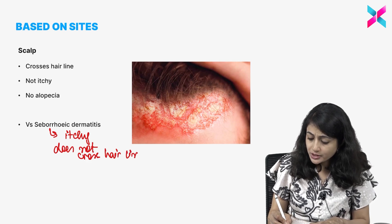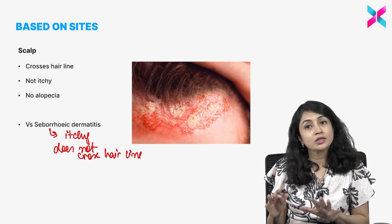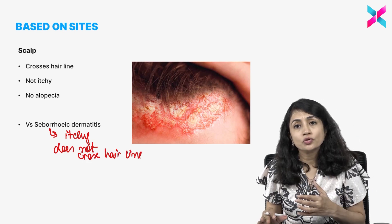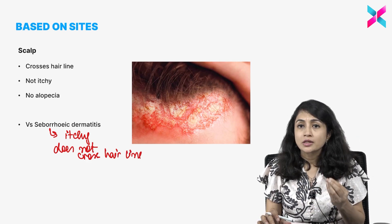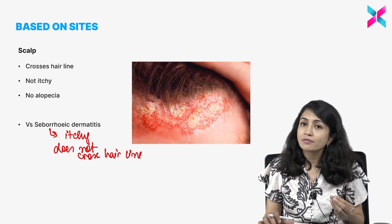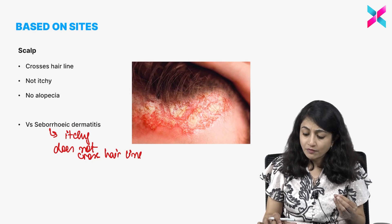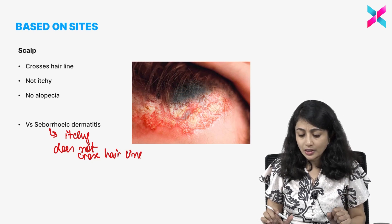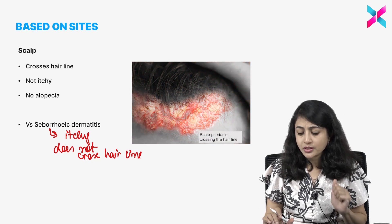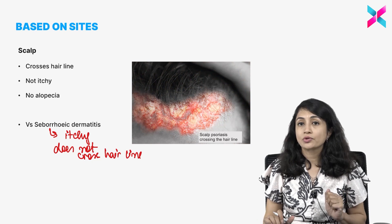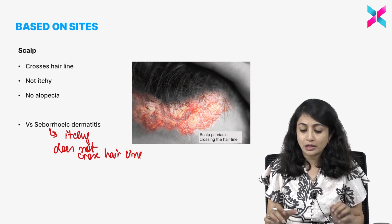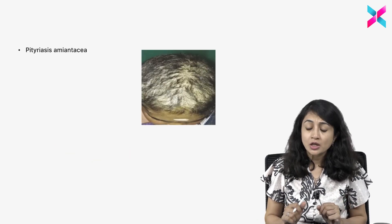The morphology is the same — you have this erythematous, indurated plaque with silvery scales which are crossing the hairline. This is scalp psoriasis, and this is typical of scalp psoriasis.